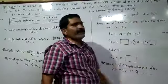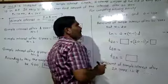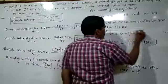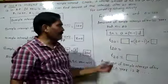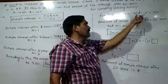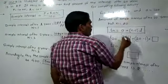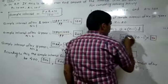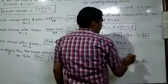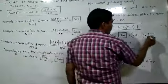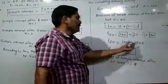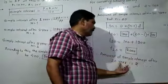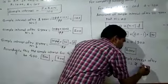To find the amount of simple interest after 20 years, we take N = 20 and use the formula: Tₙ = A + (N − 1) × D. Putting A = 100, N = 20, D = 100: T₂₀ = 100 + (20 − 1) × 100 = 100 + 19 × 100 = 100 + 1900 = 2000. Therefore, the amount of simple interest after 20 years is ₹2000.